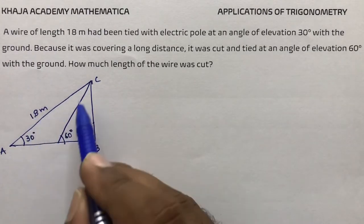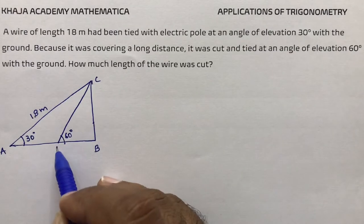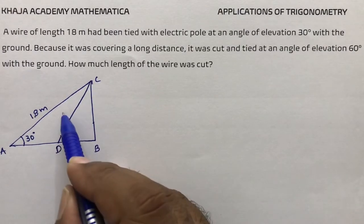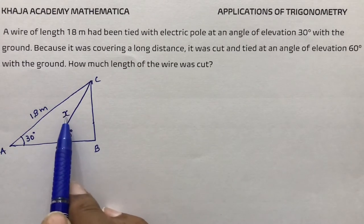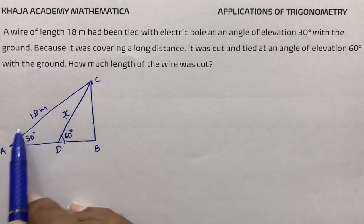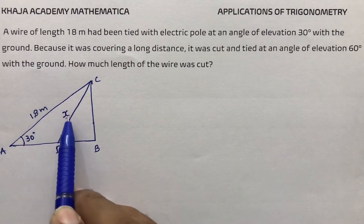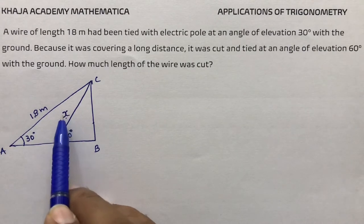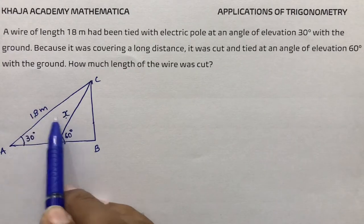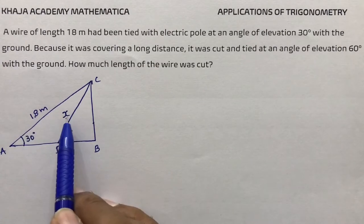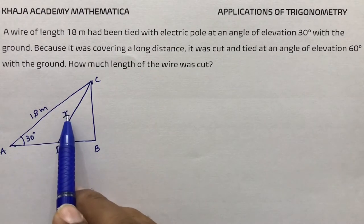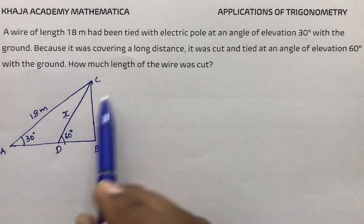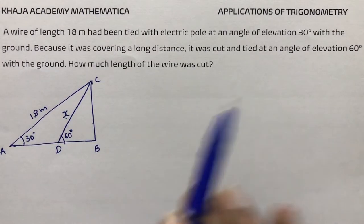We need to find CD. If the new wire length is x, then the wire cut is 18 minus x. For example, if x is 8 meters, then 10 meters was cut. First we will find x, then subtract to get how much length was cut.